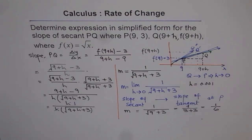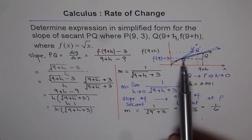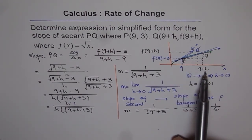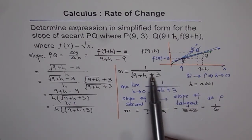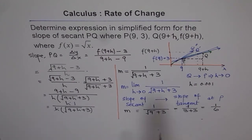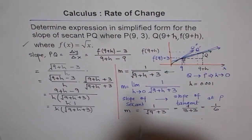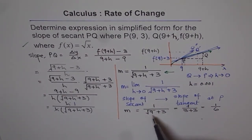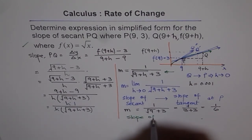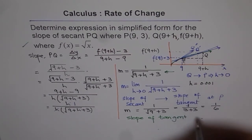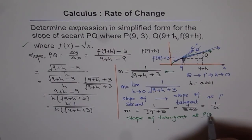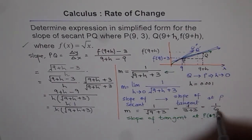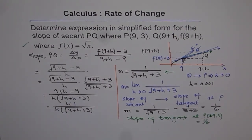So that is the slope of the tangent at point P — 1/6. That is how we can get the slope at any point on any function. We introduced a point Q that is h distance from P, and as h approaches 0, the slope of the secant approaches the slope of the tangent.